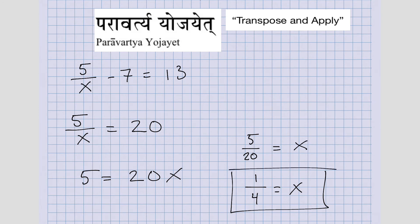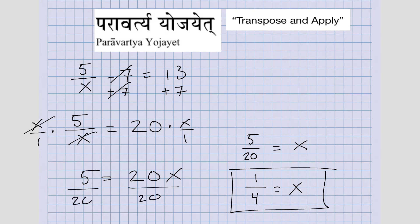All I'm doing is at this point I add seven to both sides — it cancels it out. Here I'm multiplying both sides by X — it cancels it out. And then at this point I'm dividing both sides by 20 — it cancels it out. And then from this step to this step I simply reduced my fraction. So this is the idea of transpose and apply.